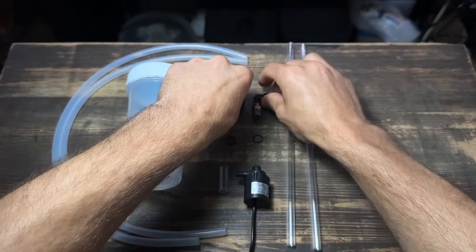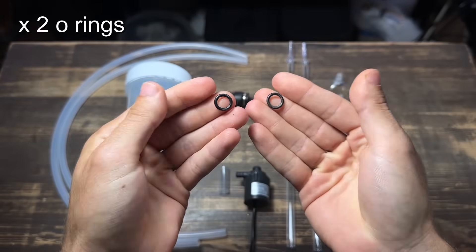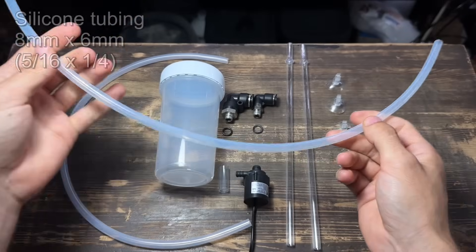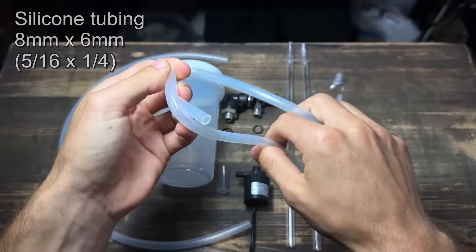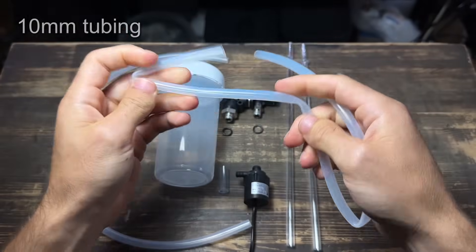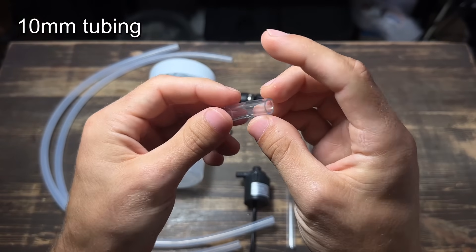Sometimes they come with them but if not you're going to need two o-rings that go at the base. As for the tubing I like to use this 8mm silicone tubing. It's much more flexible than the classic pipes used for aquariums. You'll also need a small section of regular 10mm tubing.